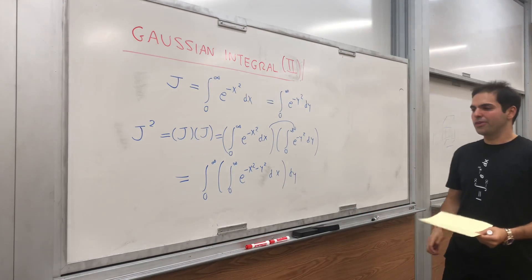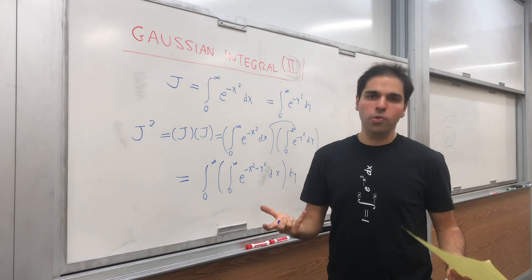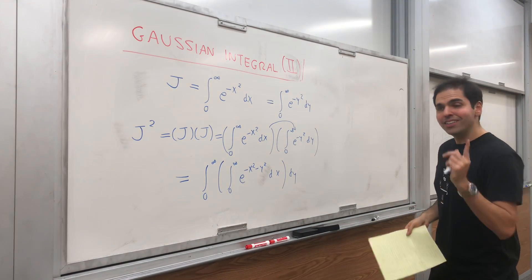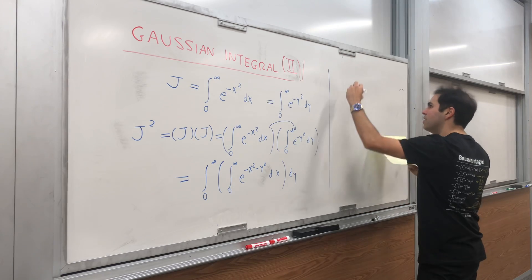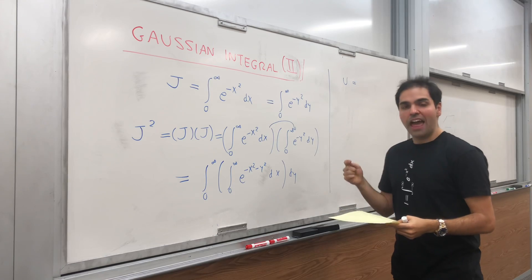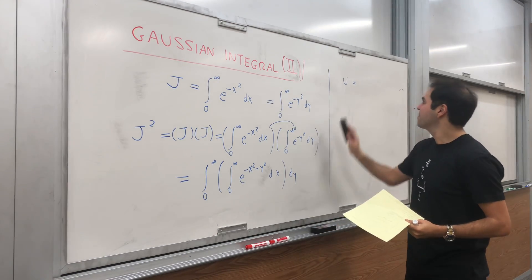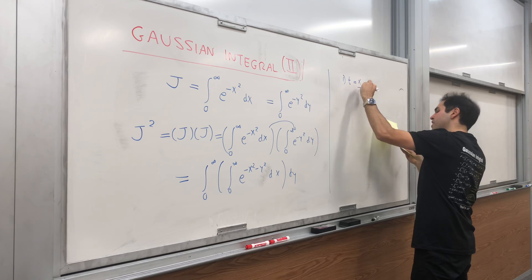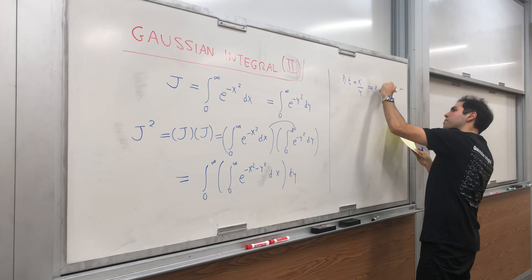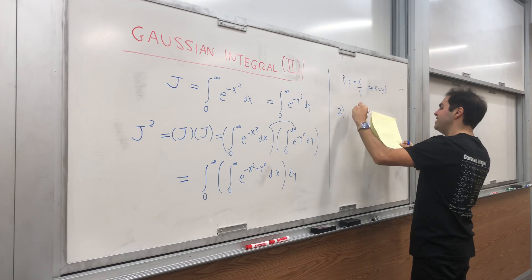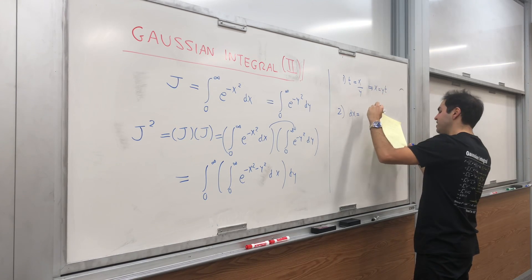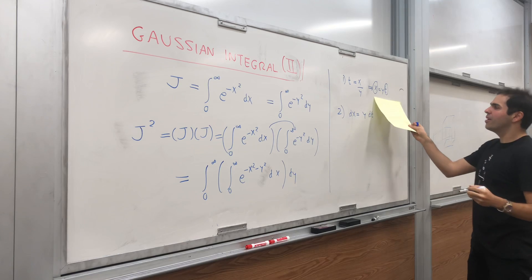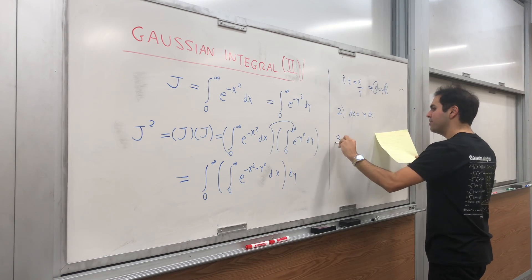Before, we used polar coordinates to simplify this, but now let's do a u-substitution instead. Let t equal x over y, so in other words x equals yt, which means dx equals y dt.